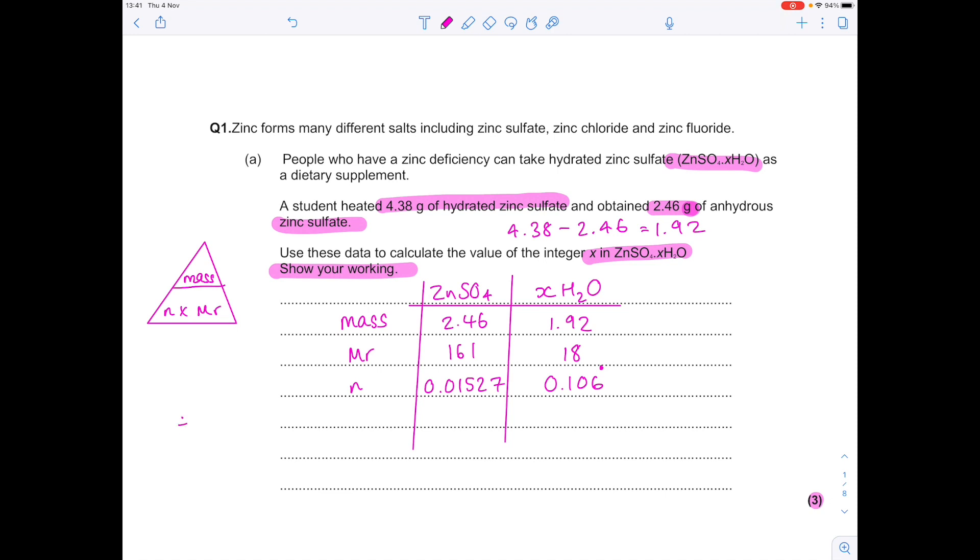Then because we need a ratio, we need one of those numbers to equal 1, so we divide both by the smallest number. So look at those two numbers, 0.01527 is obviously the smallest number. So let's divide both sides by that number to get 1 to 6.9, which we can round to 7. So the ratio is 1 to 7, which means X equals 7.